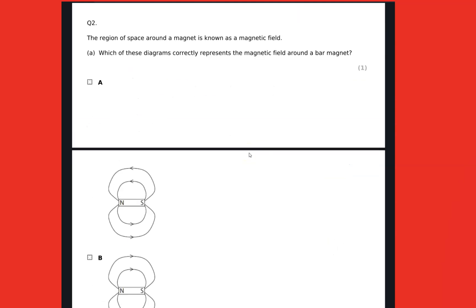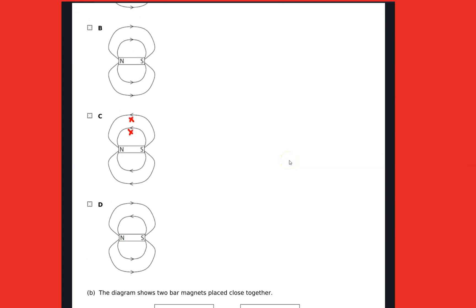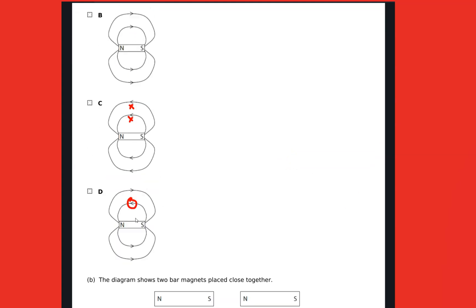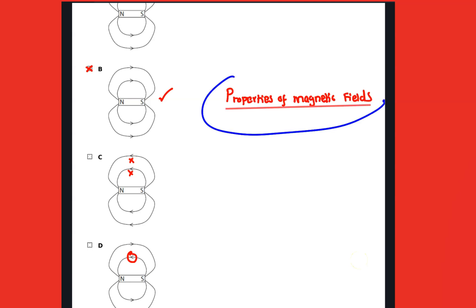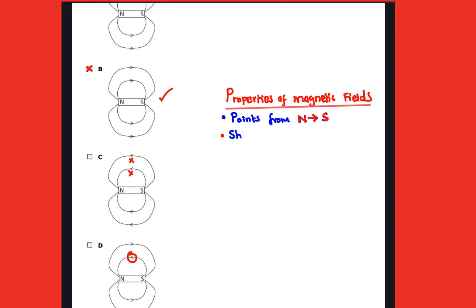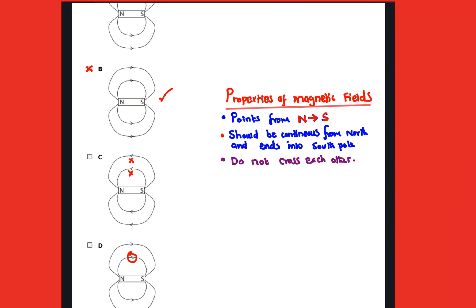We need to identify some of the mistakes in each of the diagrams. Some properties of magnetic fields to remember: they point from north to south, they should be continuous with no broken lines, and they do not cross each other.